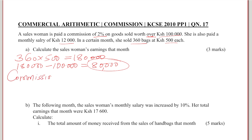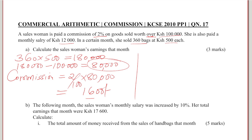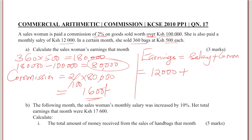Therefore, the commission will be on $80,000, that is what is above $100,000. So the commission would be 2%, that is 2 divided by 100, times $80,000. This gives $1,600. So $1,600 is the commission. Therefore, to get the total earnings, we will simply take the salary plus the commission: $12,000 plus $1,600, which gives $13,600. So $13,600 is the total earnings. That is about part A.